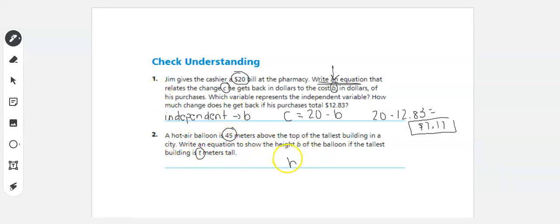So we have B equals above. So that means we're going to add 45 plus T.